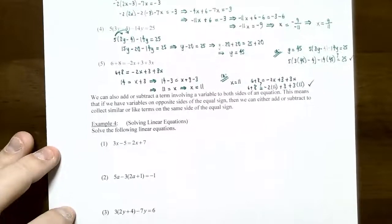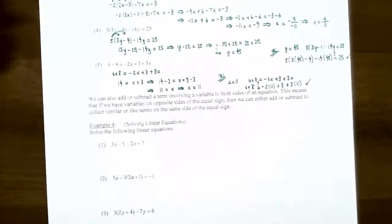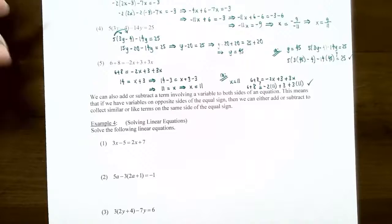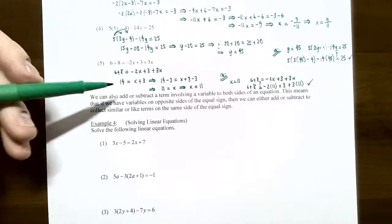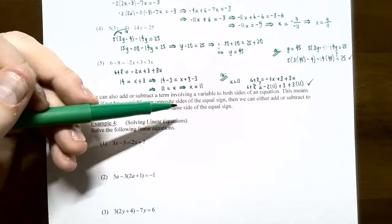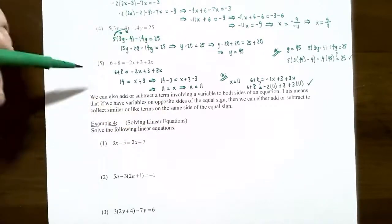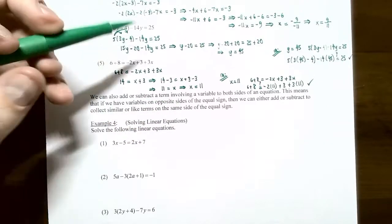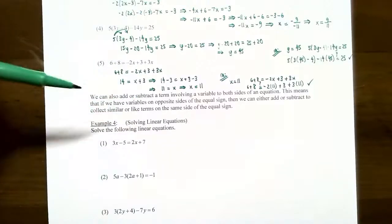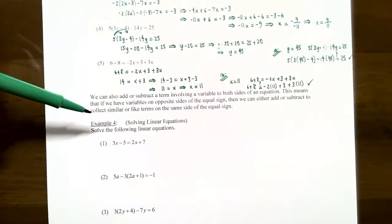In these previous five problems, we were adding and subtracting real numbers to isolate the variable by itself. It turns out you can also add and subtract a term involving a variable to both sides of an equation. This means that if you have variables on opposite sides of the equal sign, you need to add or subtract to collect all your like terms to the same side of the equation.